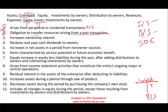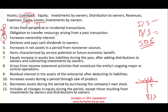Number three: increases ownership interest. What directly increases ownership interest? Investment by owners increases ownership interest, and that's usually reflected in common stock. Common stock increases on the credit side and is part of the balance sheet — it could also be listed as part of stockholders' equity, but it ends up on the balance sheet.